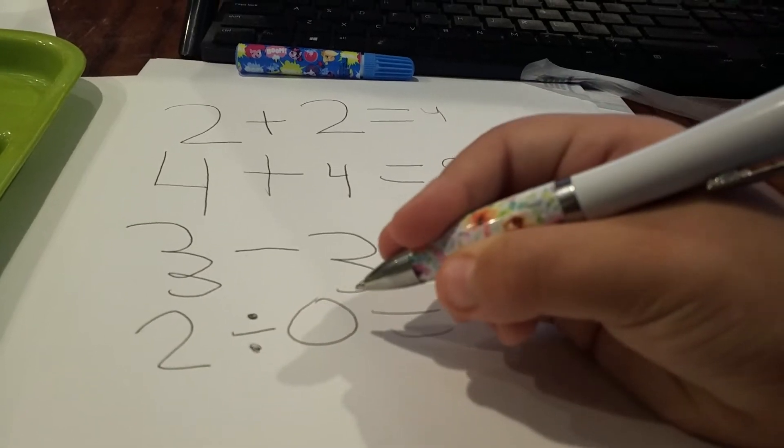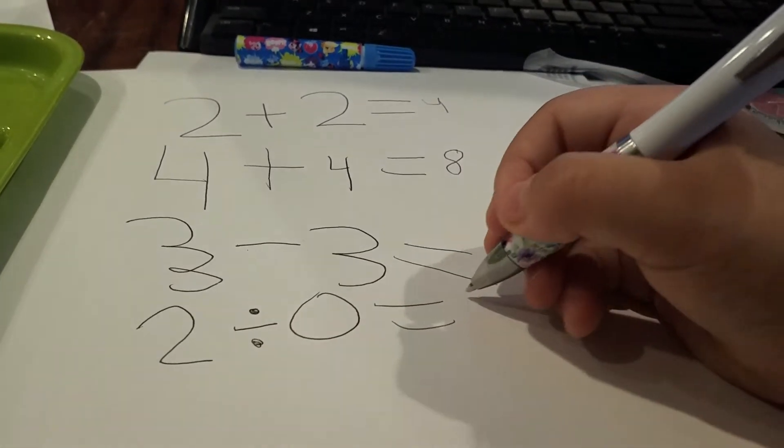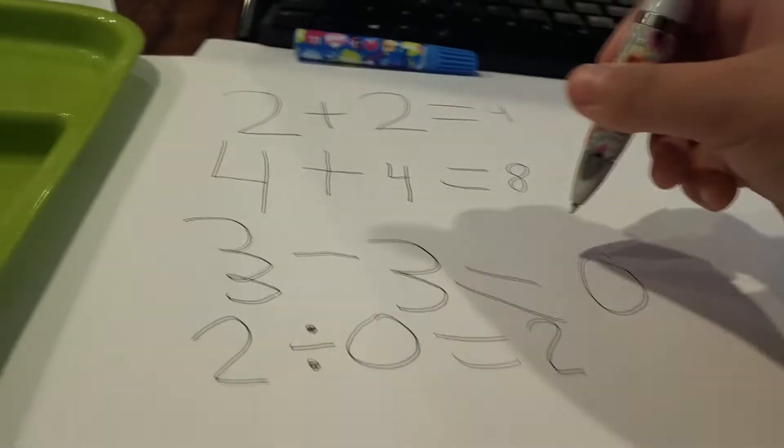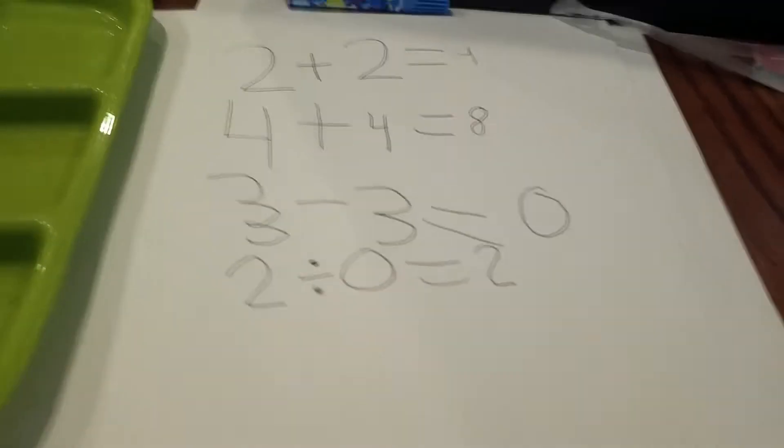2 divided by 0. It's 2 because you can't divide anything. Okay.